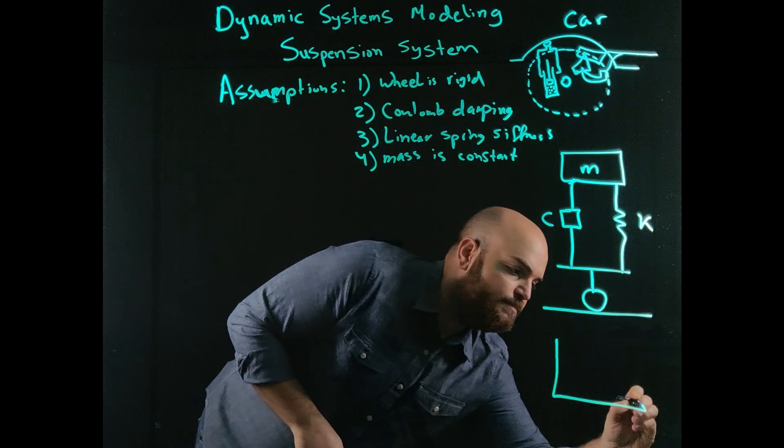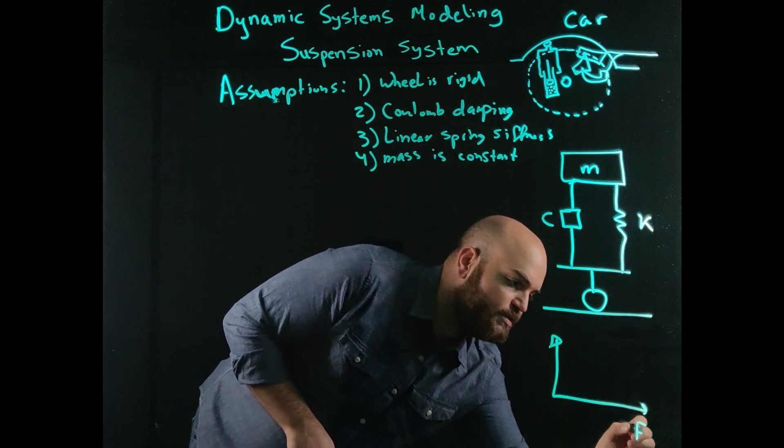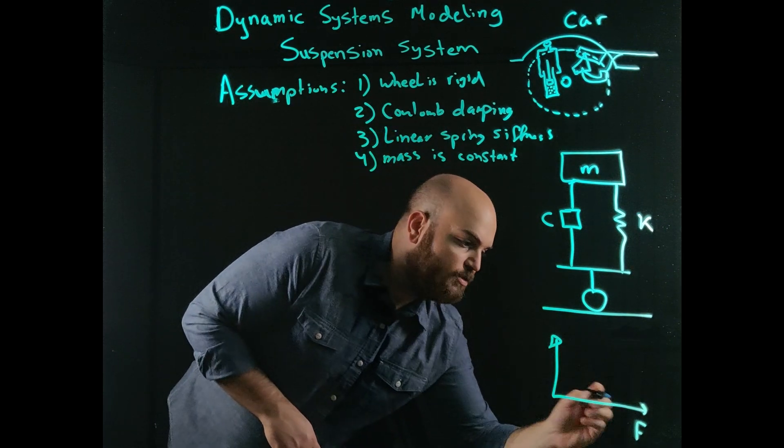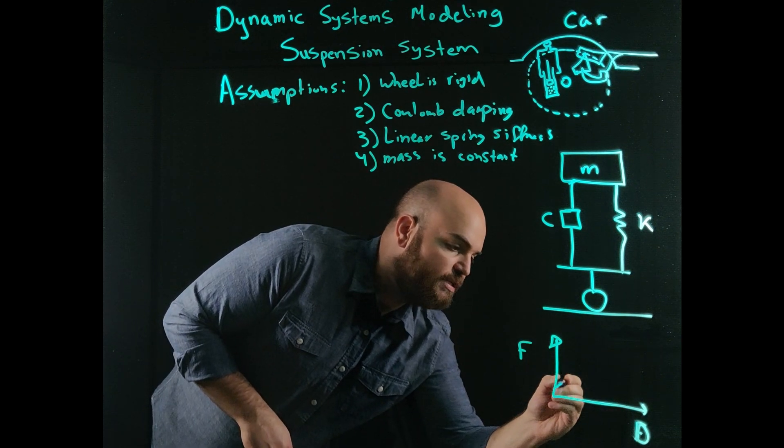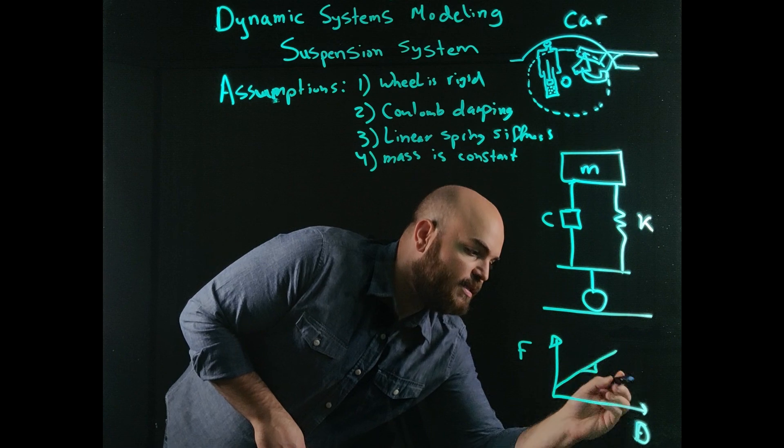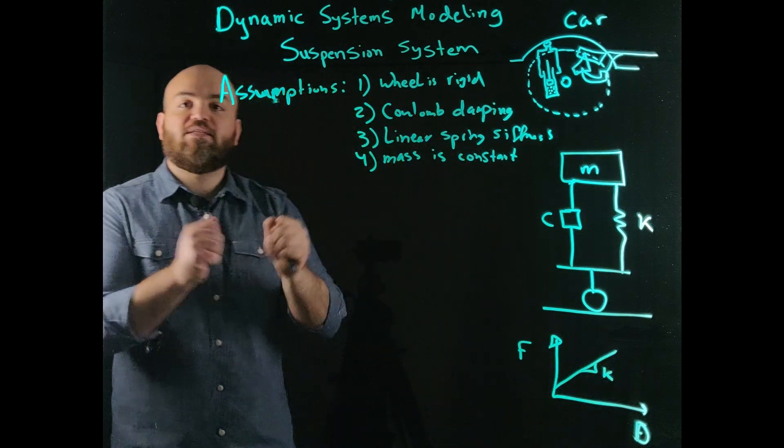And by that, I mean that this is the force applied to the spring. Sorry, this is a displacement applied to the spring. And this is the force. And you'll see that it looks something like this. The slope of this would be K, the stiffness of the spring.